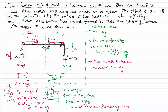When the AB mirror has acceleration 3g/4, the image formed by that mirror will have an acceleration double to that: 2 × (3g/4) = 6g/4. For a plane mirror, when the mirror has a certain acceleration, its image has double that acceleration.